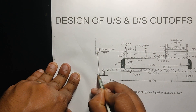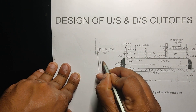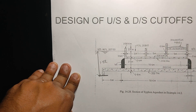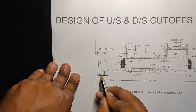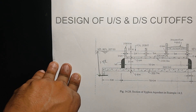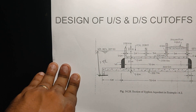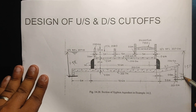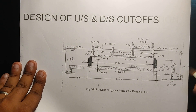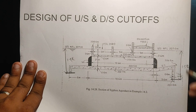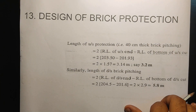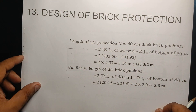The first step: bottom of upstream cutoff = upstream high flood level minus 1.5R. Similarly, bottom of downstream cutoff = downstream high flood level minus 1.5R. This completes the design of brick protection.